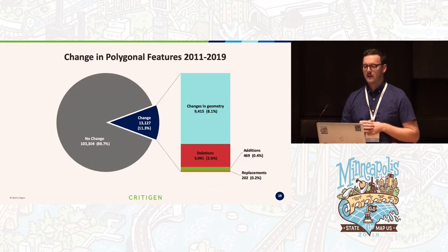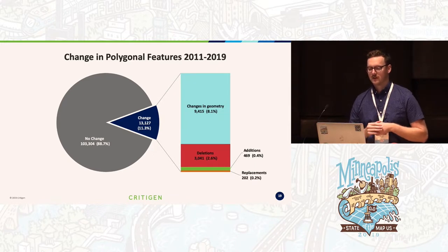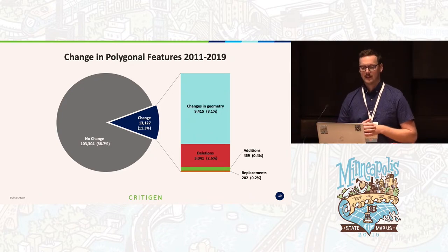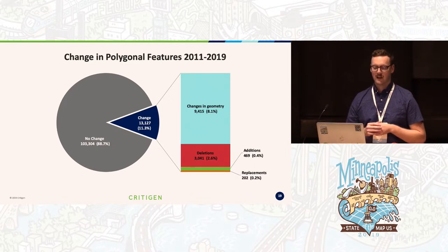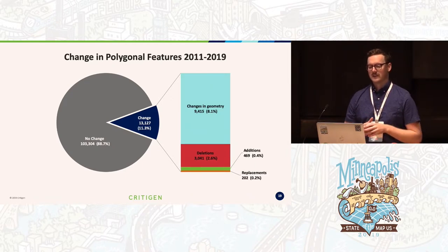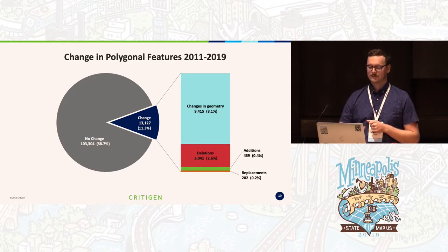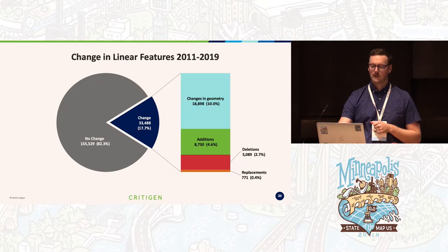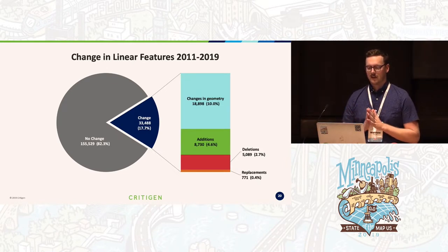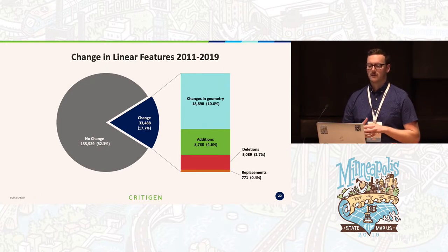Given that methodology, this chart shows our classification of polygonal features and how they changed between 2011 and 2019. The vast majority of features — about 89% — stayed the same, but 11% did change, comprised predominantly of changes in geometry. For linear features, the proportion of change increased a little to almost 18%, again mostly changes in geometry, but with a decent amount of additions as well.